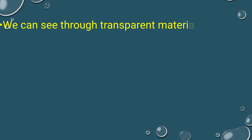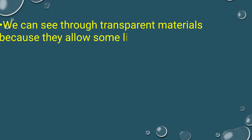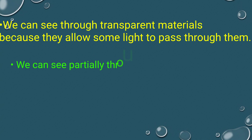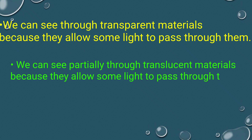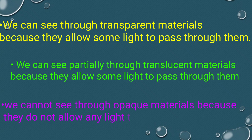We can see through transparent materials because they allow light to pass through them. We can see partially through translucent materials because they allow some light to pass through them. We cannot see through opaque materials because they do not allow light to pass through them.